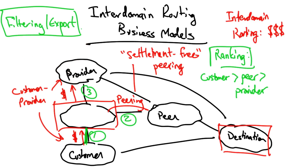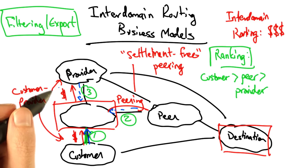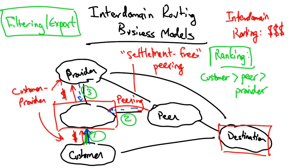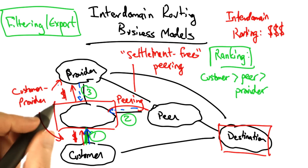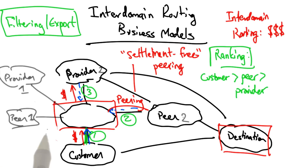The other consideration an AS has to make is filtering or export decisions — in other words, given that an AS learns a route from its neighbor, to whom should it re-advertise that route? To understand filtering and export decisions, let's add a couple more ASs to the graph: another peer and another provider.